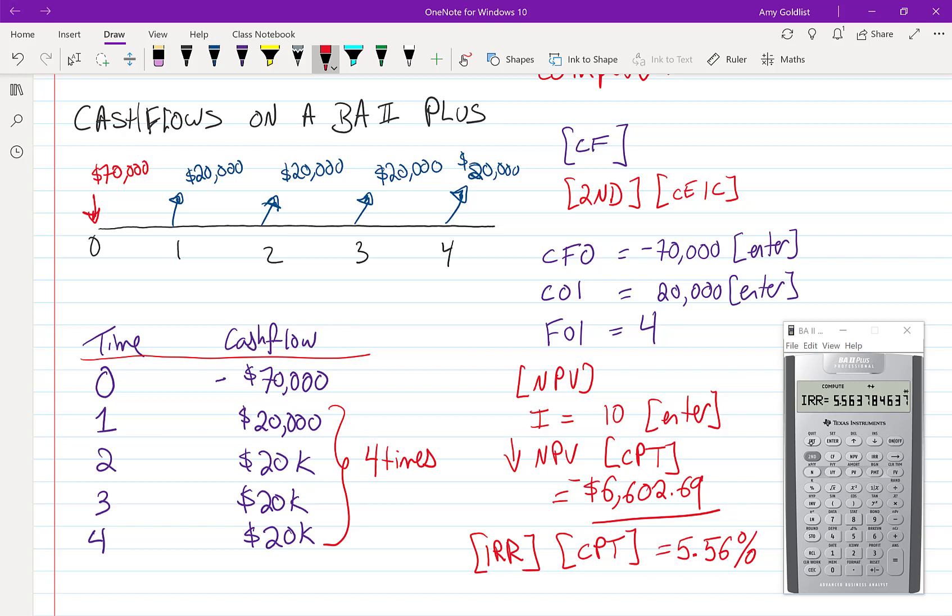If the minimum annual rate of return was 5.563784637%, then our net present value would be zero.